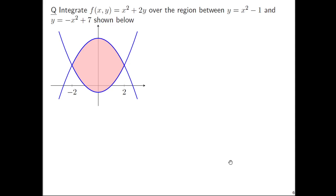So let's do this, let's at least set up what's going on. So integrate f of x comma y equals x squared plus two y over the region between the parabola y equals x squared minus one and the parabola y equals negative x squared plus seven. Just for the picture of these two parabolas, it's shown, and the region in between is shaded here in pink.